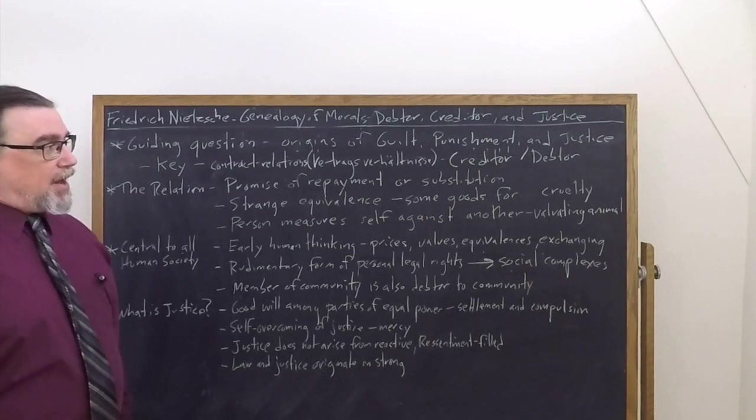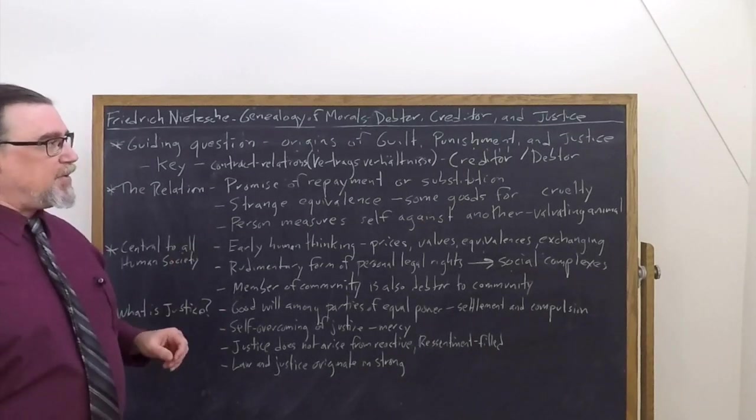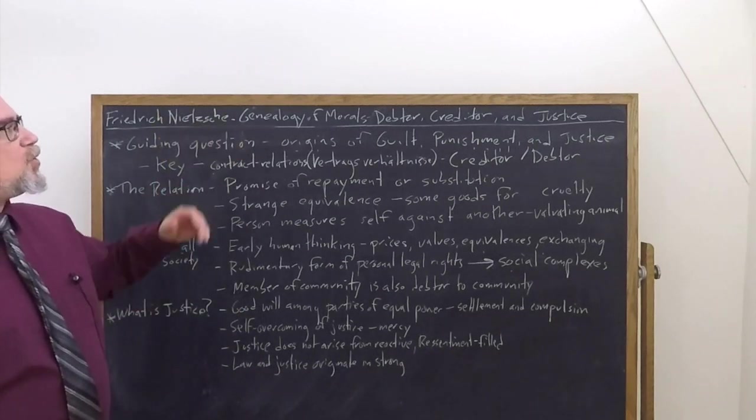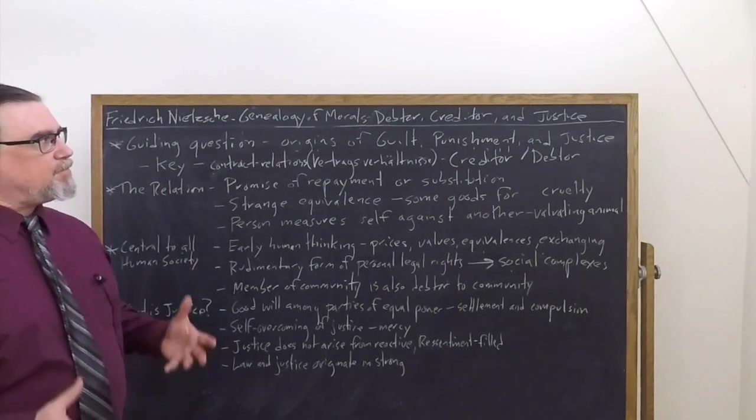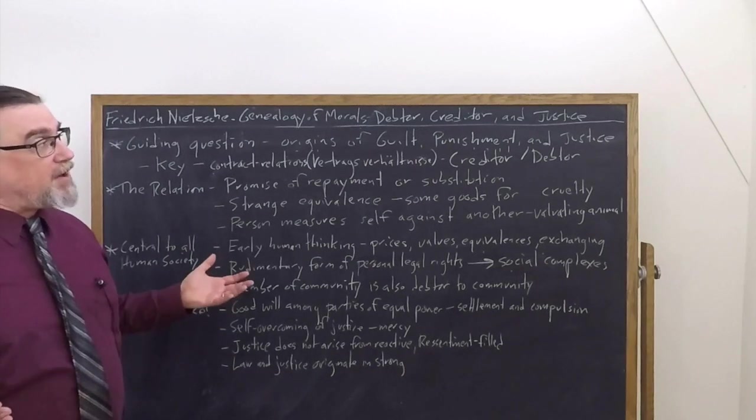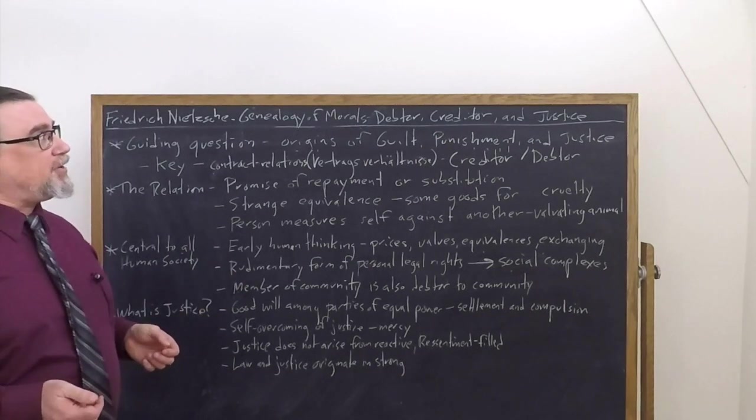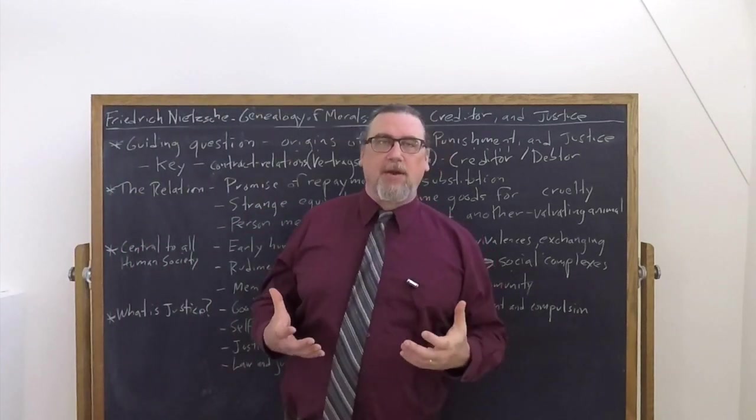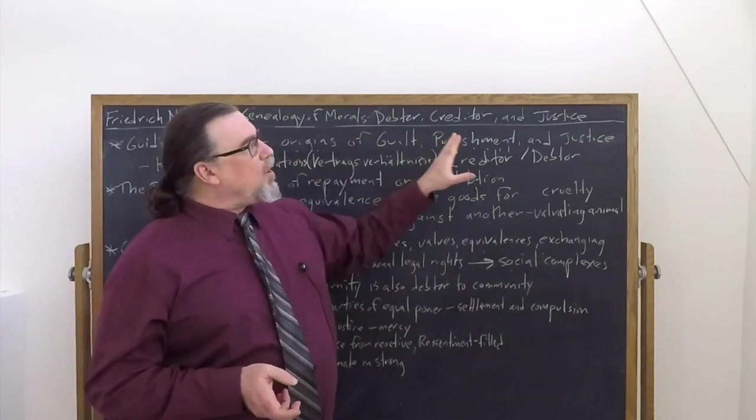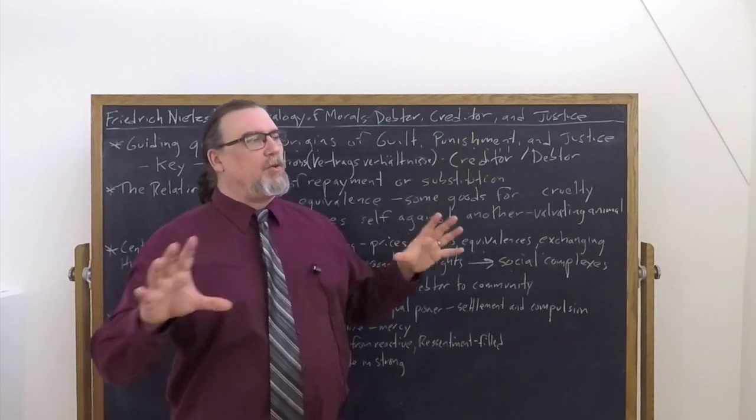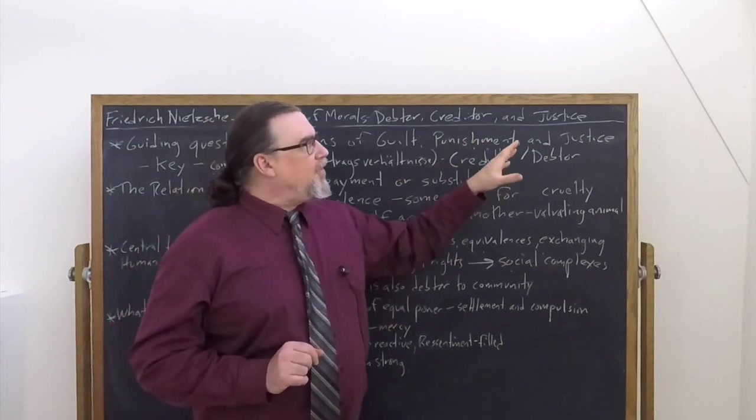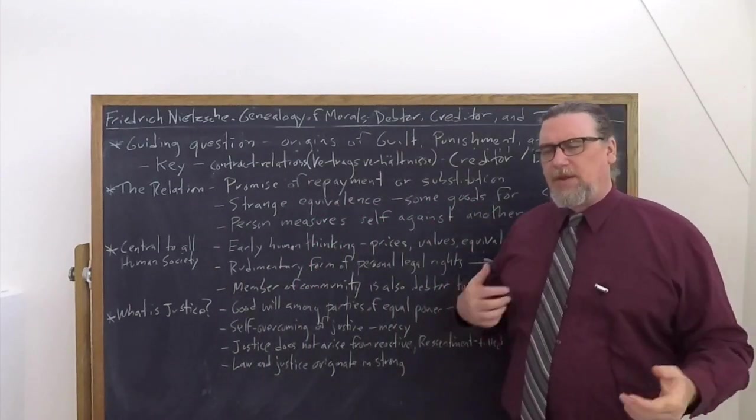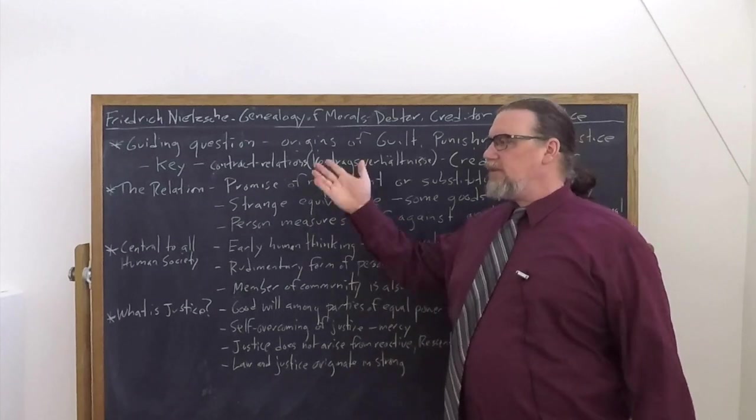But it does play a really significant role in Nietzsche's view and even allows us to get past some mistaken theories about matters. So the central question that he's really engaging with or set of questions in Essay 2 are the origins of guilt, and guilt is going to play into what he calls the bad conscience. Where punishment is deriving from, and there's a whole discussion of that. And then justice, where is this conception of justice coming from and what is it?